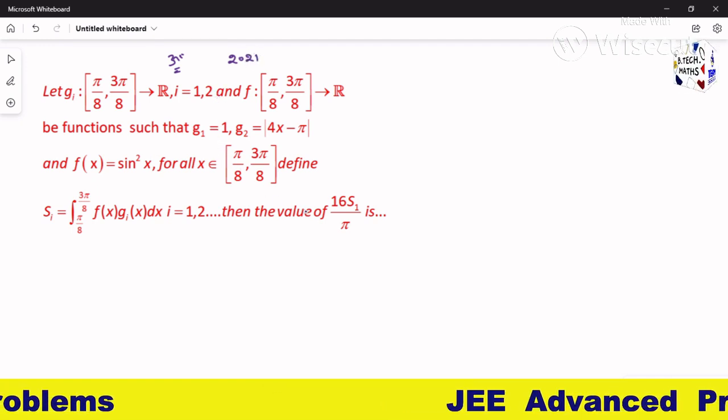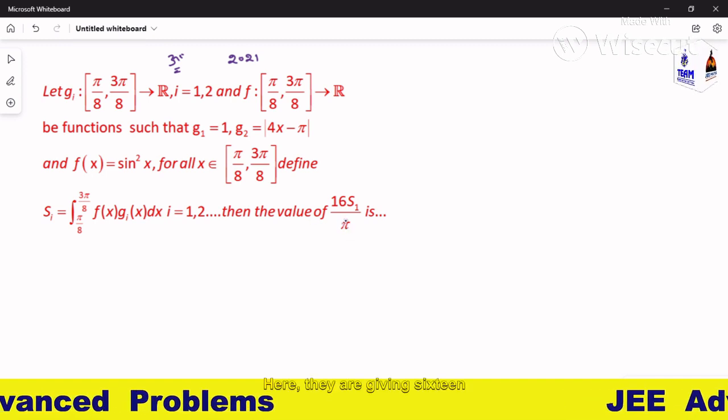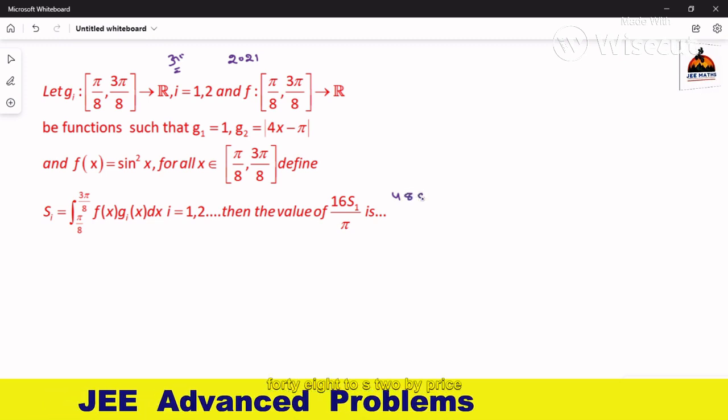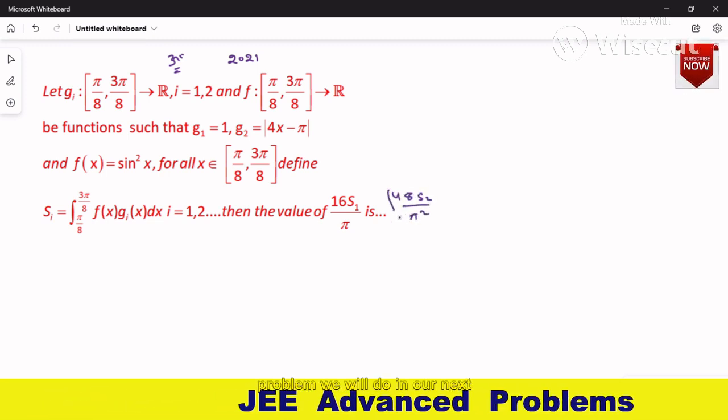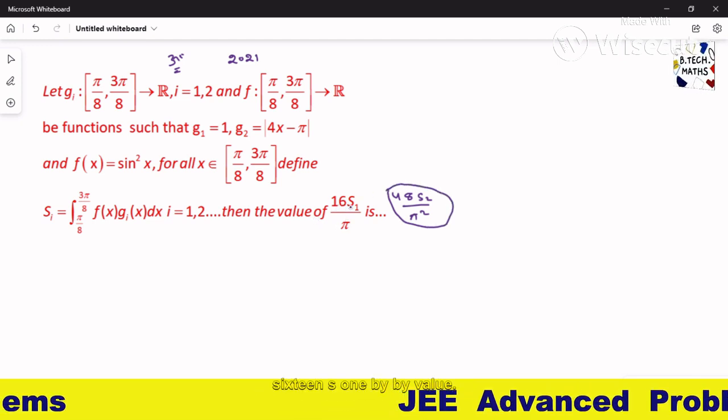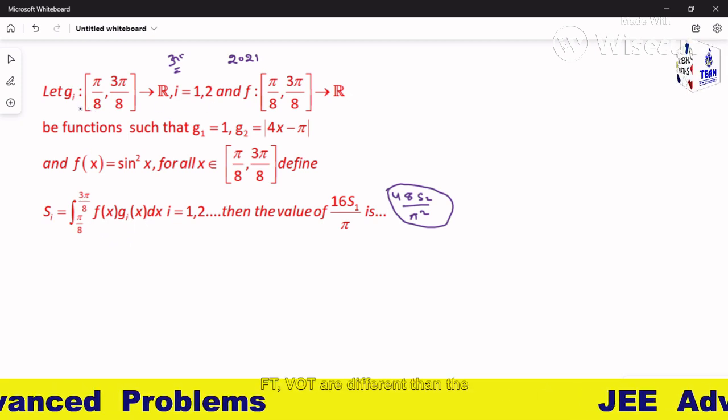They have given two types, two problems - same question but two problems. They are given 16 S1 by π, and the second question is 48 S2 by π squared. This problem we will do in the next video. Now we are solving only 16 S1 by π.